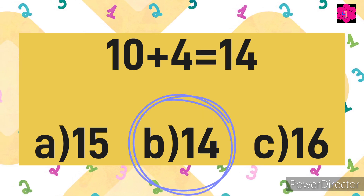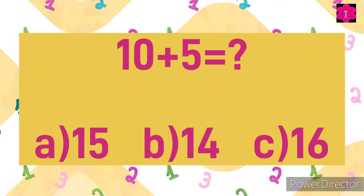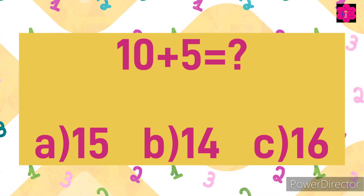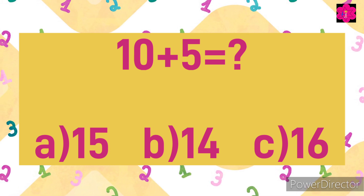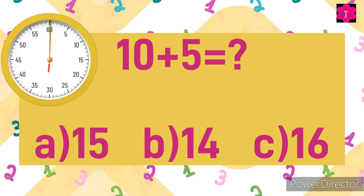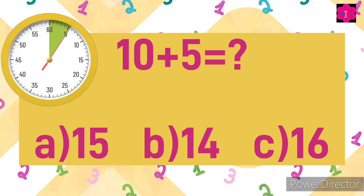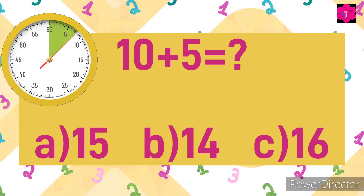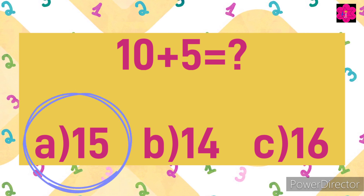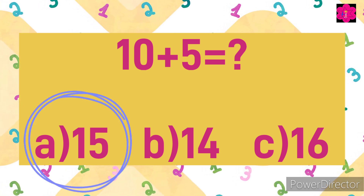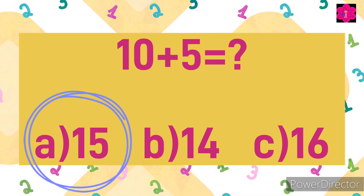Next sum is 10 plus 5 is equal to — and your options are: A) 15, B) 14, and C) 16. Your time starts now. Good job kids! Yes, correct answer is A) 15. 10 plus 5 is equal to 15.